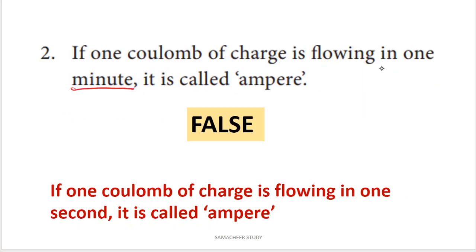Next statement: if one coulomb of charge is flowing in one minute, it is called ampere. Students, you will learn the ampere definition in the electric current chapter. The correct definition is: if one coulomb of charge is flowing in one second, it is called ampere. So this statement is false — change 'one minute' to 'one second'.